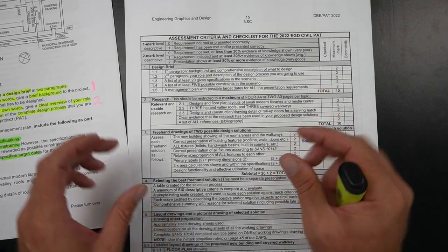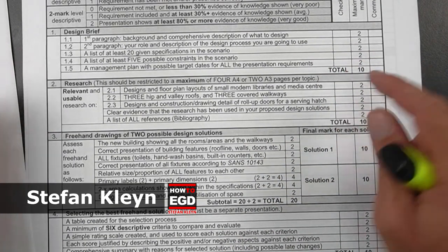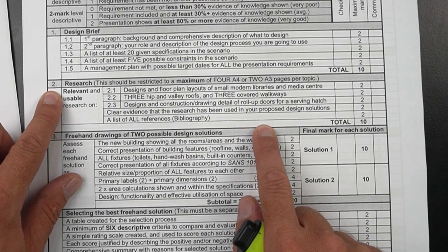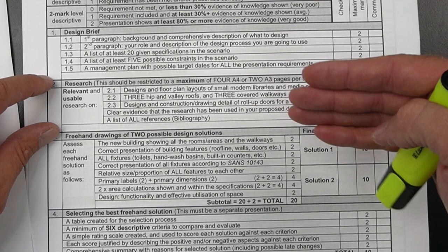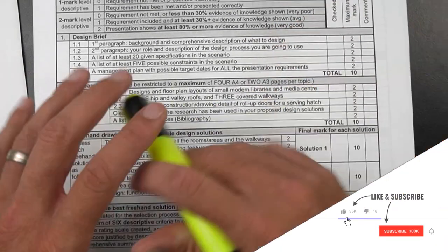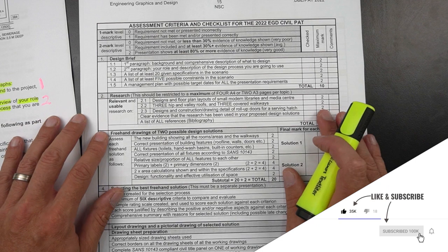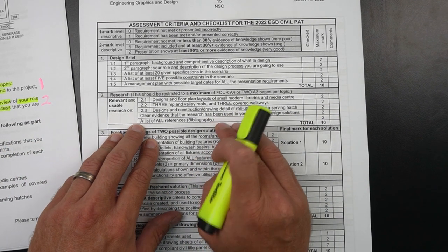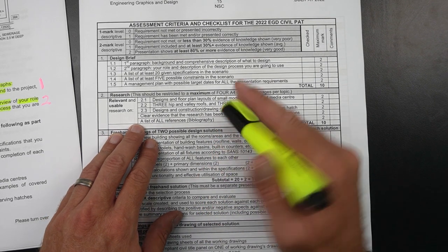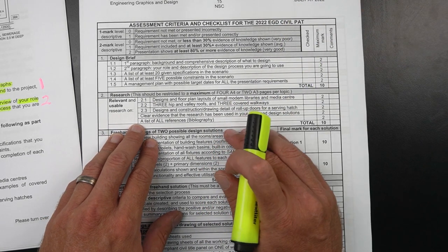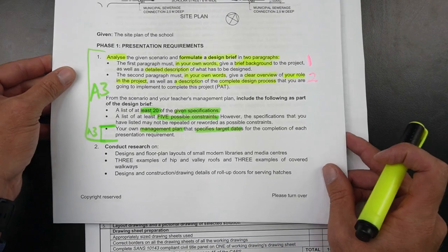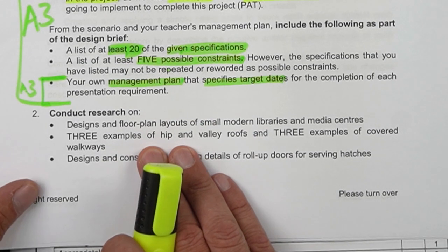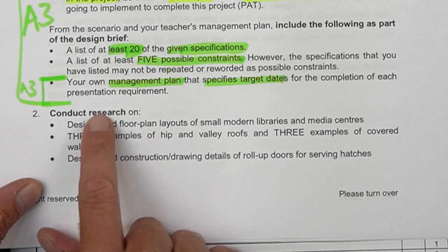For the radio engineering graphics and design learners, in this episode I'm going to be detailing the research component of your PET for this year. My previous videos have already spoken about the design brief and the actual requirements for this PET. We're going to zoom in on the research because this is an important part — it's in this phase that you actually set up your PET for success. If we go to the PET document, on page 11 they give an explanation of what is required with your research.